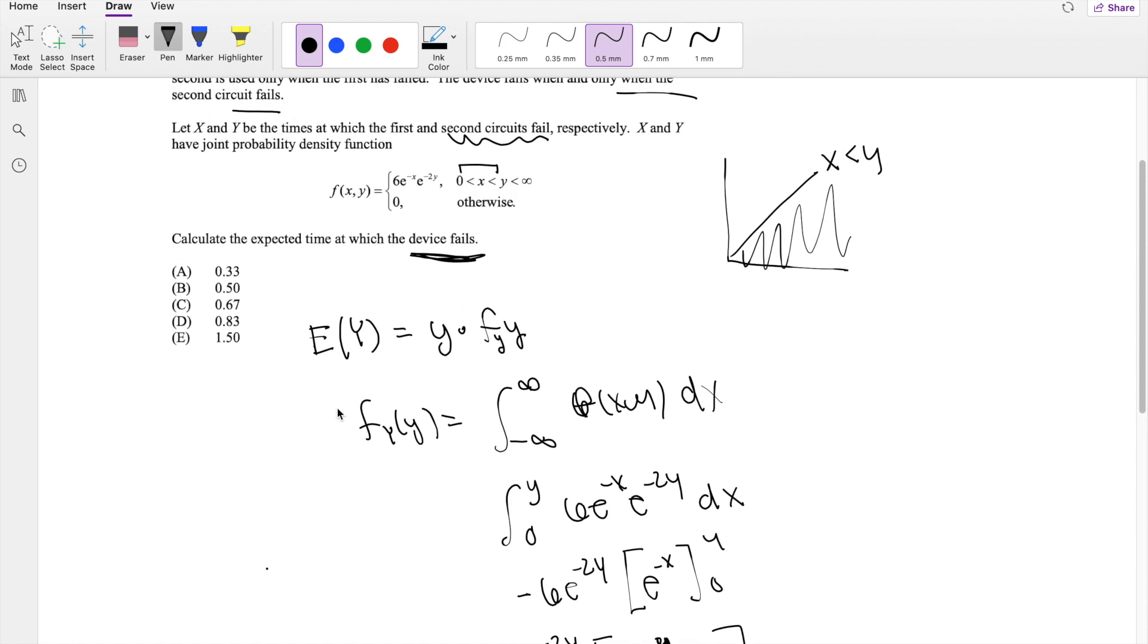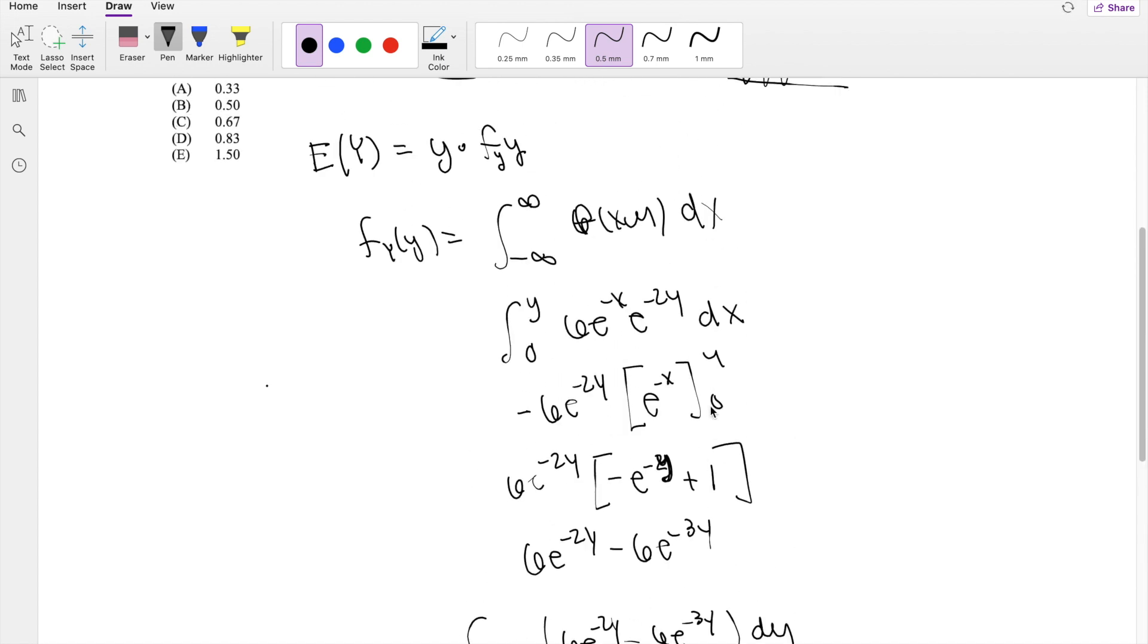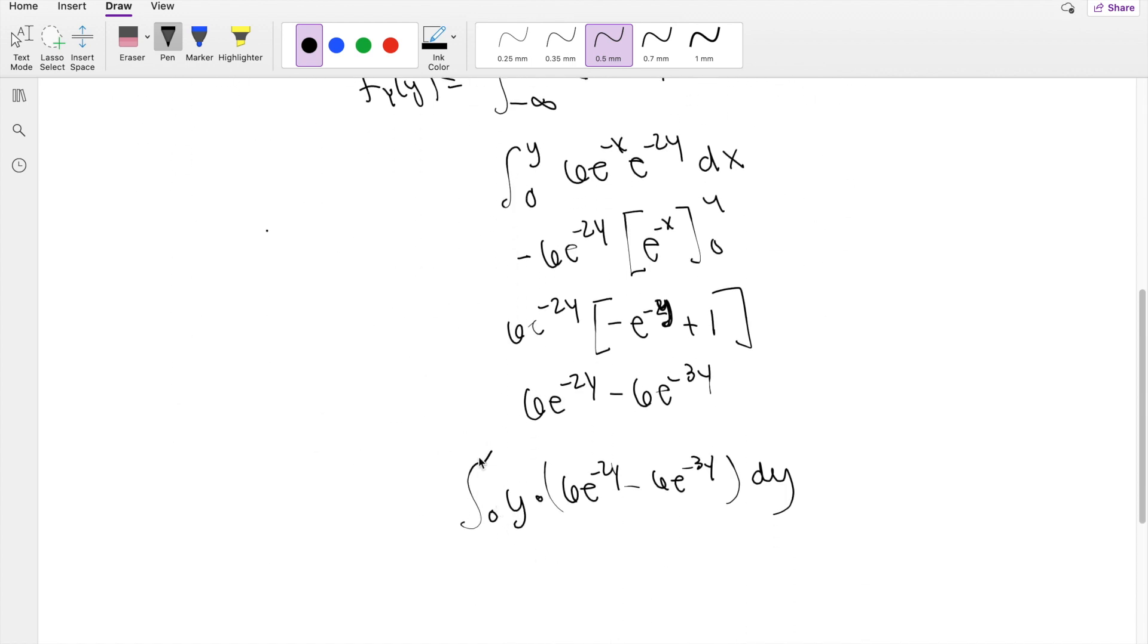And then if I'm trying to find E[y], I just have to multiply y times that. So the integral of y times (6e^(-2y) - 6e^(-3y)) dy. What range does y exist on? Y exists from 0 to infinity.